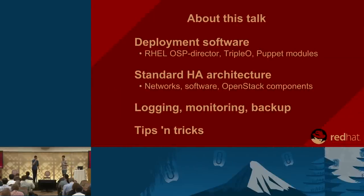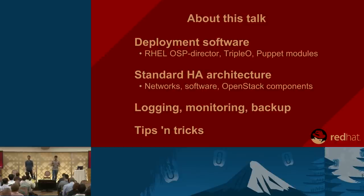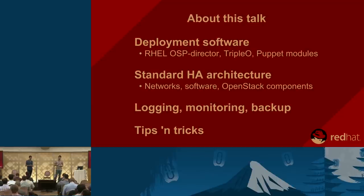We will start by presenting our deployment software. At Red Hat we use a product called OSP Director. OSP Director is built on top of Triple O, which is an OpenStack project. The logic behind Triple O is to use OpenStack to deploy OpenStack — you have an undercloud, which is the first OpenStack, and an overcloud, which is the OpenStack you are actually deploying. On top of that, we use Puppet modules for configuration.